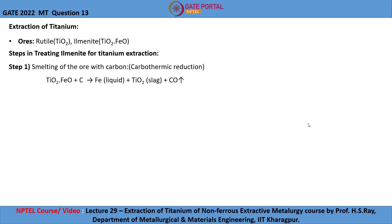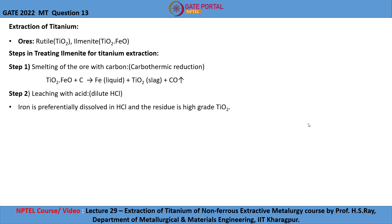The slag obtained after the carbothermic reduction is not pure titanium oxide and contains some amount of iron oxide. The slag has to be further refined to generate high-grade titanium oxide, for which it is subjected to the next step — leaching. Leaching is a hydrometallurgical process where the slag is washed continuously with liquid to preferentially separate the unwanted metal from the slag.